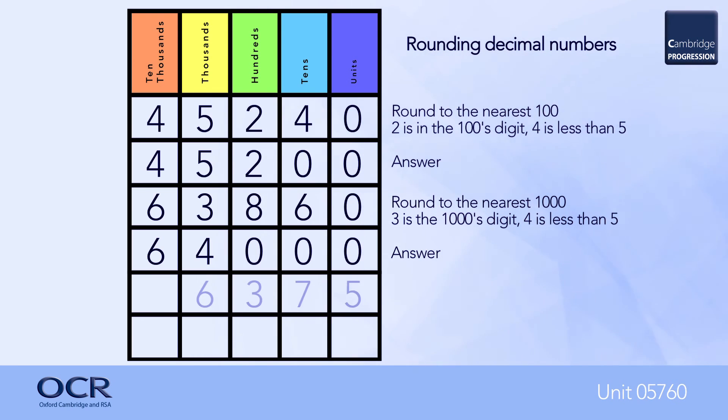If it is less than 5, then leave the target digit as it is. If it is 5 or more, add 1 to the target digit. And finally, replace the remaining digits with zeros. The three examples here illustrate this process.